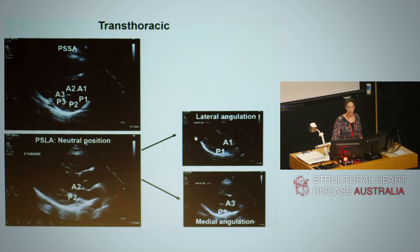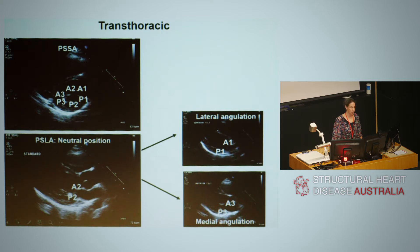With transthoracic imaging, if we look at the top image, this is the short axis view with the left ventricle, right ventricle, and we can see the mitral valve with the anterior leaflet. This is post-trimedial commissure with A3 and corresponding P3 of the posterior leaflet. Anterolaterally, we've got A1, P1, and the central A2 and P2 segments.